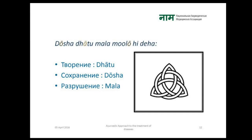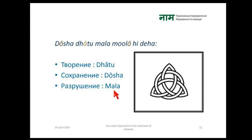The five Panchamaha Bhutas in the universe combine in the body to form three Doshas. As the Sanskrit verse states: Doshas, Dhatu, Mala — the body is formed out of structural constituents like Dhatu, functional elements like Doshas, and waste materials like Mala.